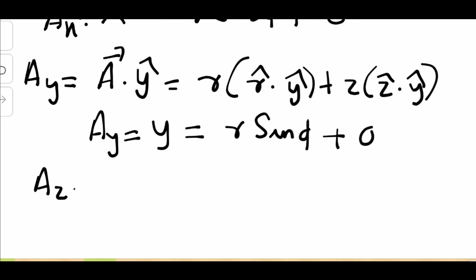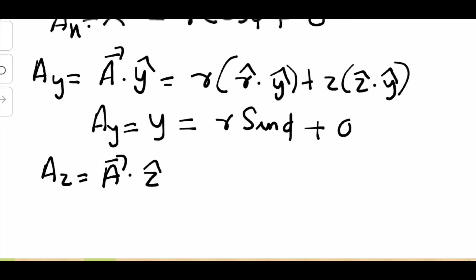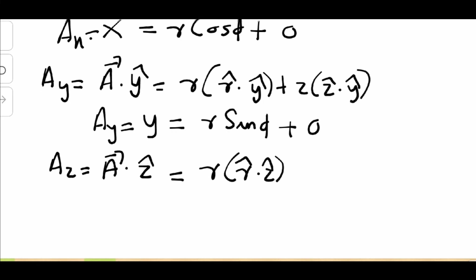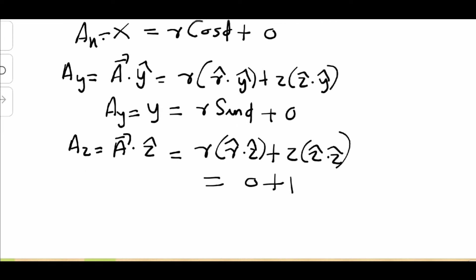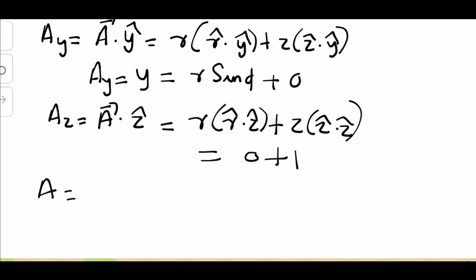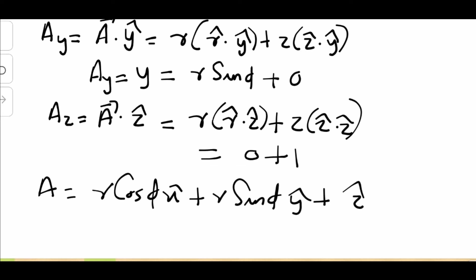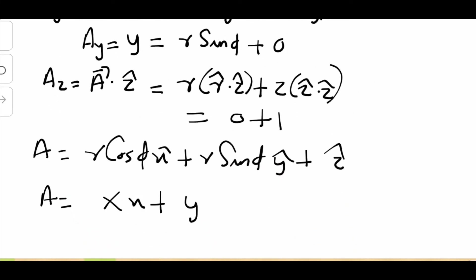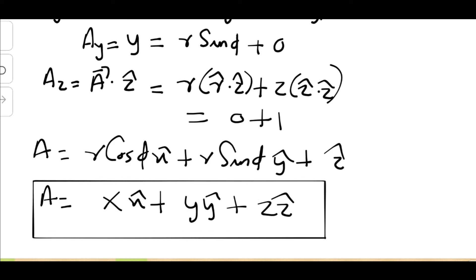Similarly, Az = A·ẑ = R (r̂·ẑ) + Z (ẑ·ẑ) = 0 + Z·1 = Z. So the transformed vector A equals R cosφ x̂ + R sinφ ŷ + Z ẑ, which is just x x̂ + y ŷ + z ẑ. That's how you transform your vector from Cartesian to cylindrical and back to Cartesian easily.